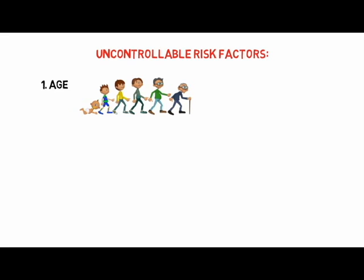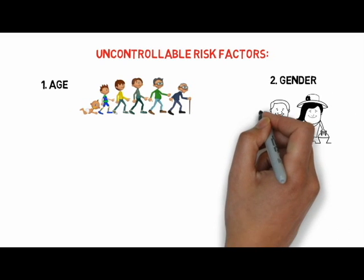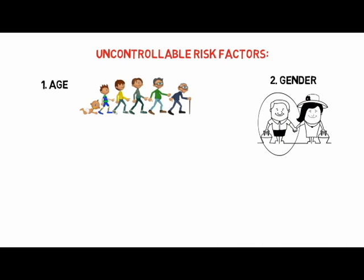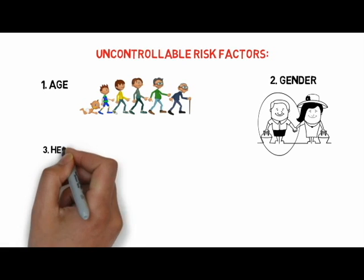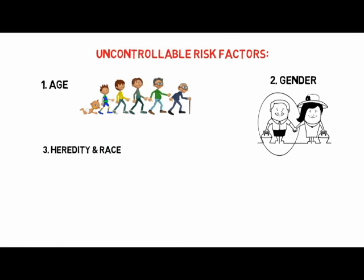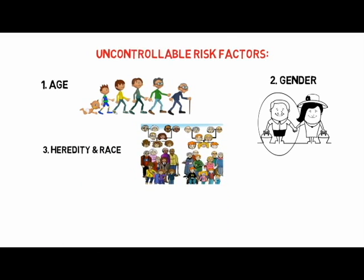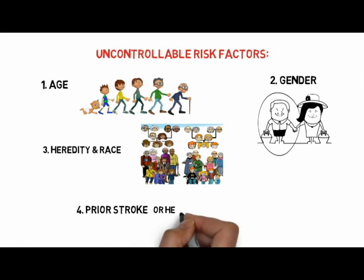Second, gender. Stroke is more common in men than in women — in most age groups, more men than women will have a stroke in a given year. Third, heredity and race. You have a greater risk of stroke if a parent, grandparent, sister, or brother has had a stroke. African Americans are at increased risk of developing a stroke.